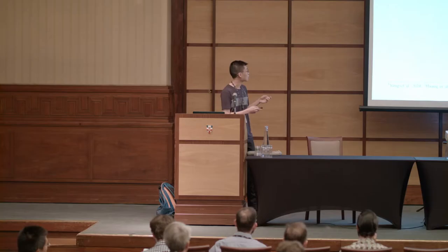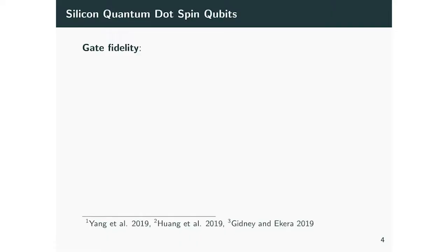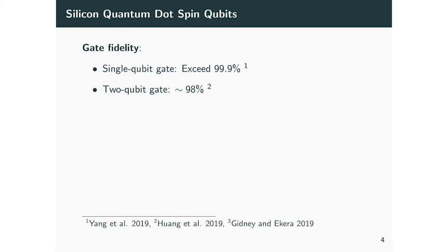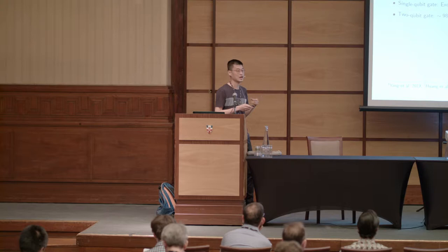The first thing you'll be interested in is what is the gate fidelity of this kind of qubit. For single qubit gates, it can exceed 99.9% nowadays. For two-qubit gates, there is a recent nice paper from the REST group showing 98% controlled-rotation gates. This is, of course, a bit lagging behind more mature platforms like superconducting qubits and trapped-ion qubits.